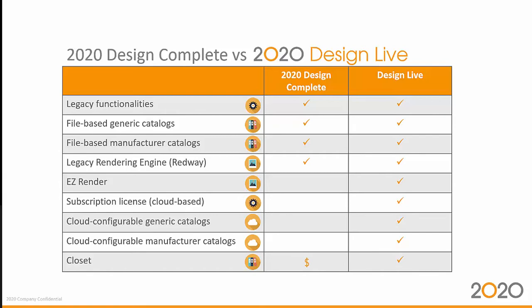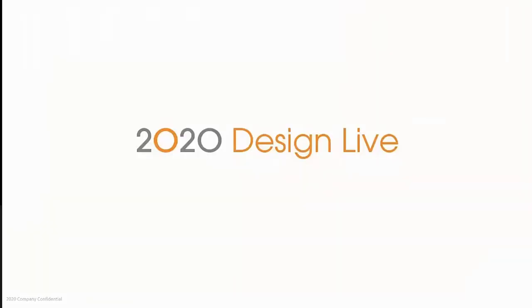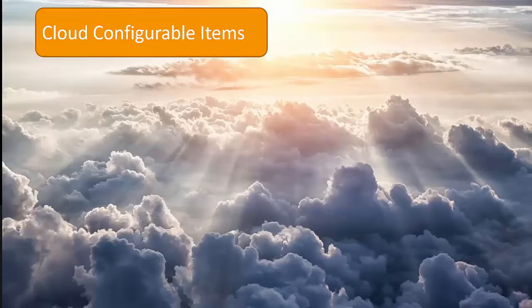New functionality in 2020 Design Live includes Easy Render, subscription licensing, access to cloud configurable generic catalogs, and cloud configurable manufacturer catalogs. This is where we're starting in the new playing field. We also include the closet functionality, which was previously available as an add-on to the Design Complete license. Let's now go into the details of cloud configurable items.